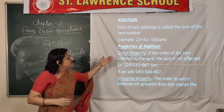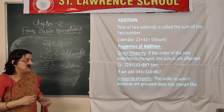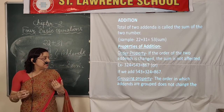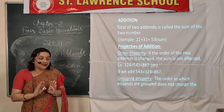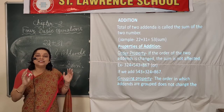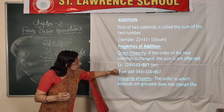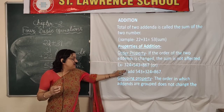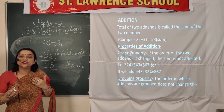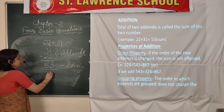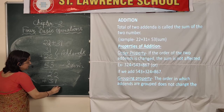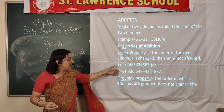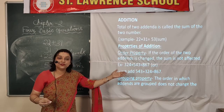Now we will see some properties of addition. The first property is the order property: if the order of the 2 addends is changed, the sum is not affected. So whenever we are taking 2 numbers to be added and we change their position, the answer doesn't change. For example, 324 plus 543 is 867. If we add 543 plus 324, it will also be 867. Here also, 22 plus 31 and 31 plus 22 both give 53. Order doesn't matter.